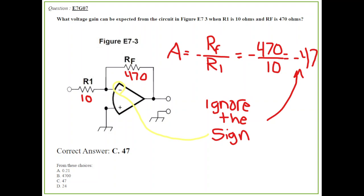You can see right here, I've worked this one out for you. I've worked all of them out. You ignore the inversion sign when you're talking about gain. What voltage gain can be expected? The feedback resistor is 470 ohms. The input, or R1, is 10 ohms. And you just plug it into the gain formula. Gain is resistor feedback divided by resistor 1. Gives you 470 ohms divided by 10 ohms. Gives you 47.